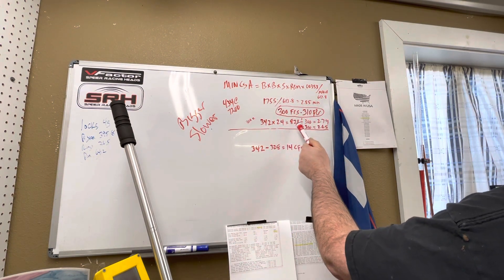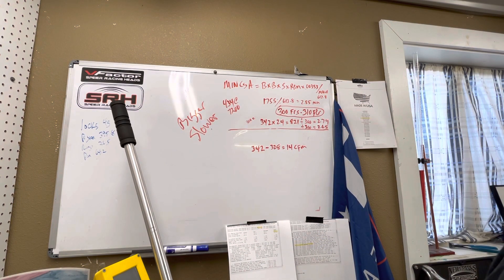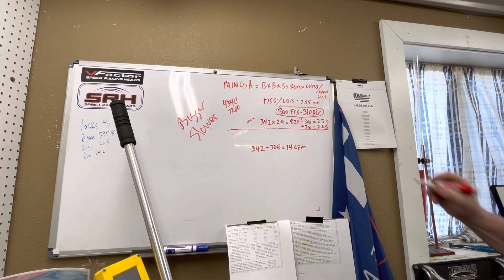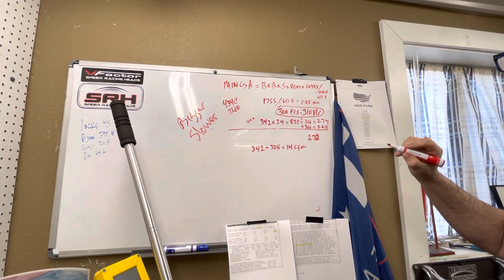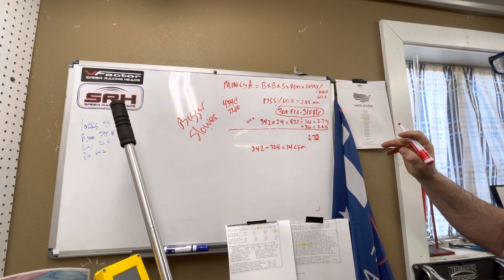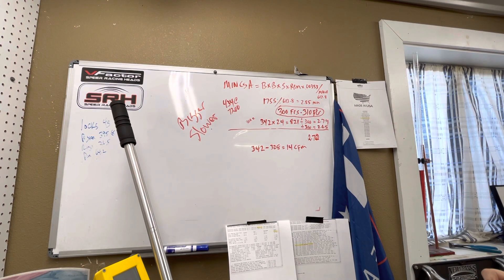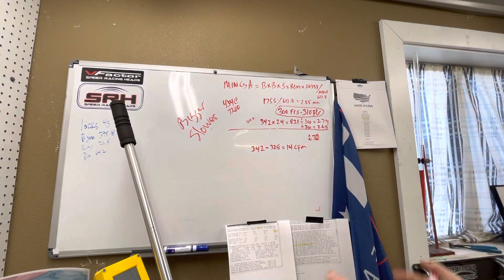So it flows 342 at 0.800 times 2.4 equals 821, divided by 300 feet per second is 2.72, and divided by 310 is 2.65. The head is actually 2.7, it's 2.72 at the pushrod, I call it 2.70. So it's right in between there, it's within error as they would say.